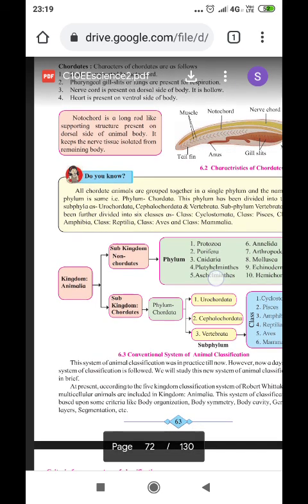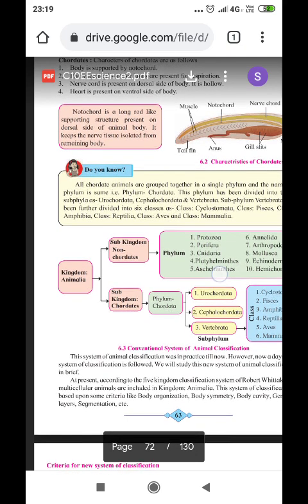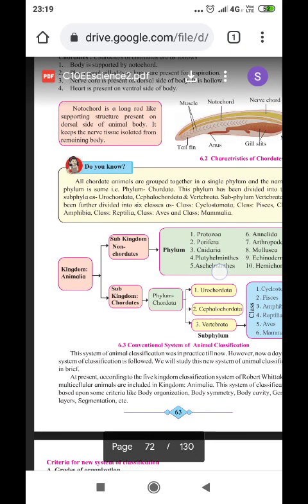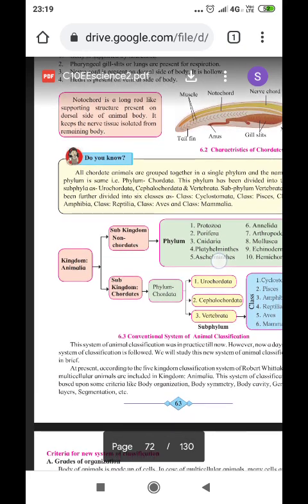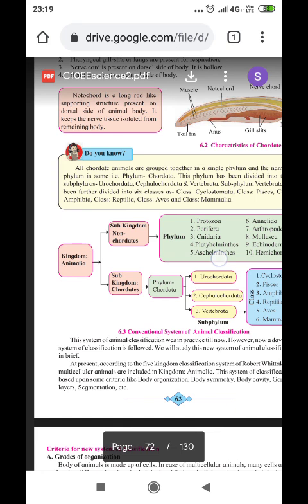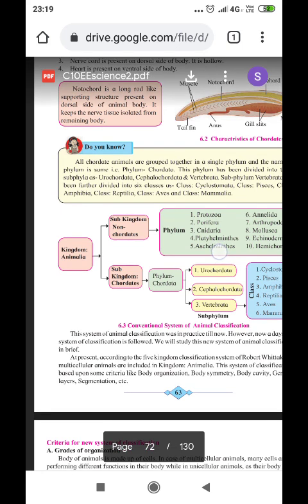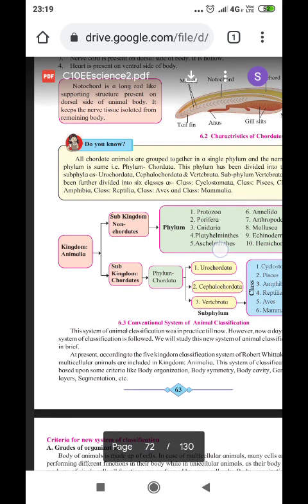Based on these characteristics, it is being classified. All chordate animals are grouped together in a single phylum, and the name of phylum is same, phylum cordata. Phylum has been divided into three sub-phylums, such as urocordata, cephalocordata, and vertebrata.